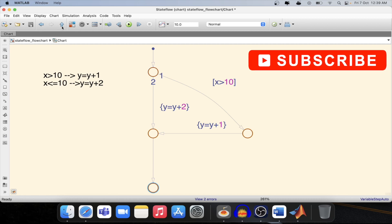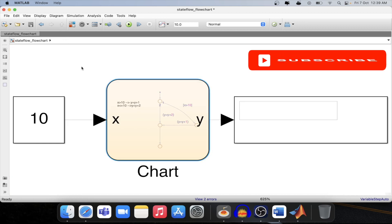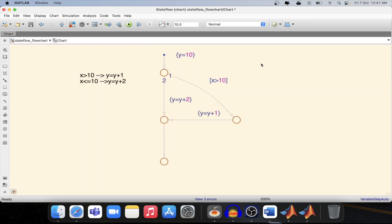Now let's step and see how the model is working based on the state flow implementation of the flowchart. In this chart, we have added some more outputs to the initial transition, which is the default transition. So we will be initializing y as 10 in the default transition so that the state flowchart will work properly.